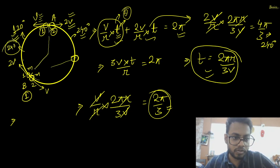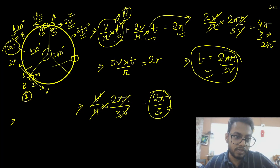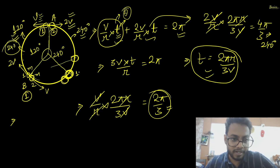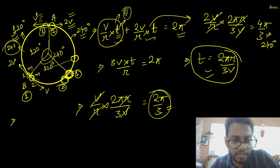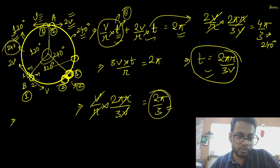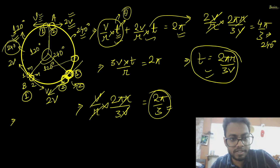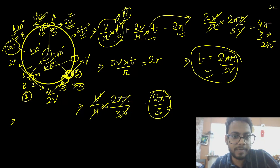After the second collision, velocities interchange again. Now particle 1 has velocity V and particle 2 has velocity 2V — the same as the initial scenario. So particle 1 will travel 120° and particle 2 will travel 240° from the second collision point. Starting from the point at 240° from A, particle 1 traveling 120° brings us back to point A, completing the cycle.